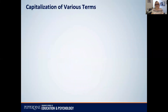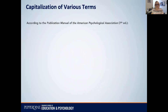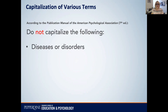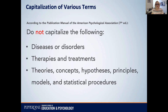What the APA manual advises is to not capitalize these three categories: diseases or disorders, therapies and treatments, theories, concepts, hypotheses, etc.